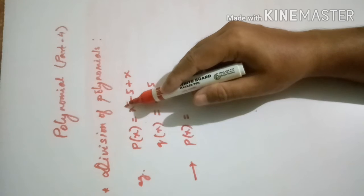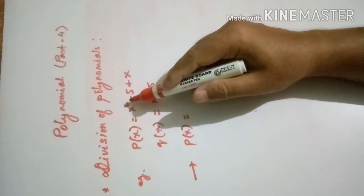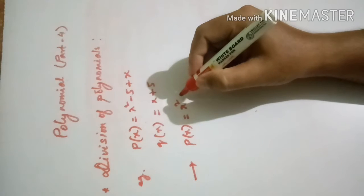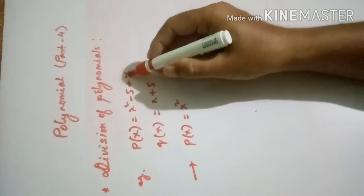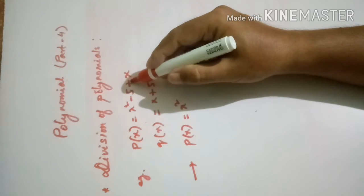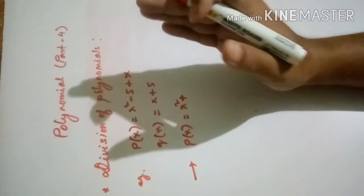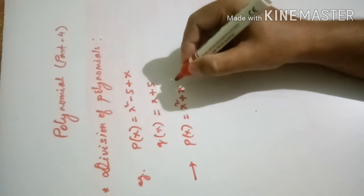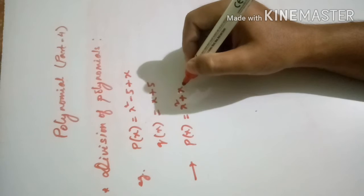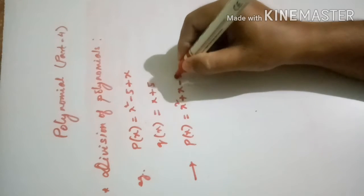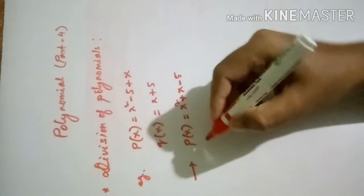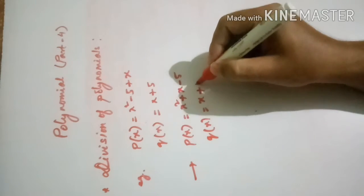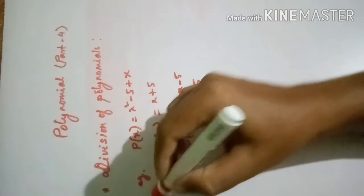The highest power here is x², next comes x¹, then x⁰. Before x the sign is plus, so we write +x. The constant term is −5. So the standard form is x² + x − 5. Then q(x) = x + 5 is already in standard form with the x term and constant term. So we have arranged both polynomials in standard form — this is the first step.